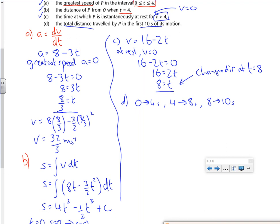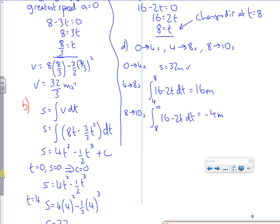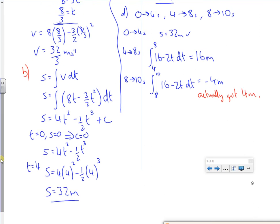I'm going to cheat. Do I know the distance for the first one? From 0 to 4 seconds, I know that's 32 meters. From 4 to 8 seconds, I'm going to do the integral of 16 minus 2t between 4 and 8. I'm going to cheat, use my calculator, and I get 16 meters. Then I'm going to look between 8 and 10. So 8 to 10, 16 minus 2t, that will give me minus 4 meters. So I actually got 4 meters there. If I'd just done it straight through to 10 without that knowledge that it stopped at 8, I'd have got the wrong answer.